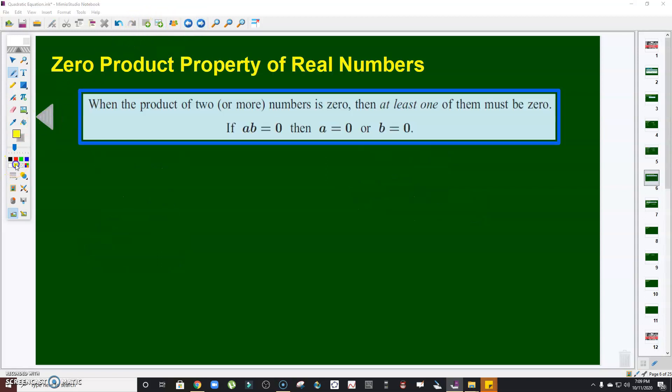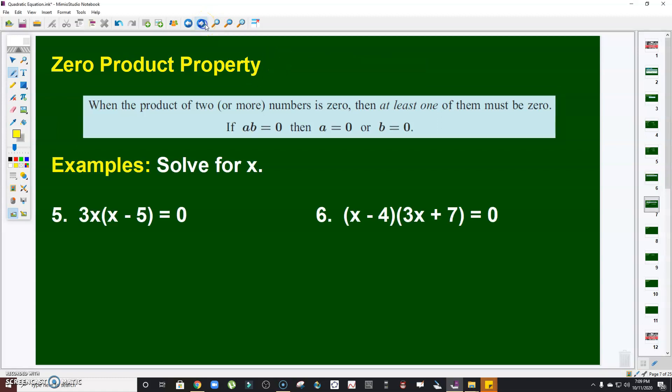Zero product property of real numbers. When the product of two or more numbers is zero, then at least one of them must be zero. If a times b equals zero, then a is zero or b is zero. Take note of that, ZPP.